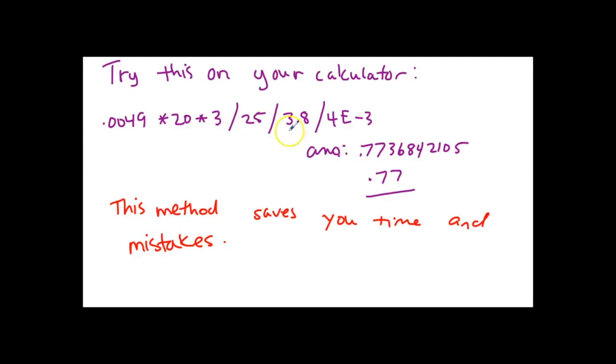If you do all that exactly the way I have it written here, you're going to get the correct answer without significant digits. Your goal is to use correct significant digits. 0.7736842105 does round to 0.77 using correct significant digits. This method here saves you time and mistakes.